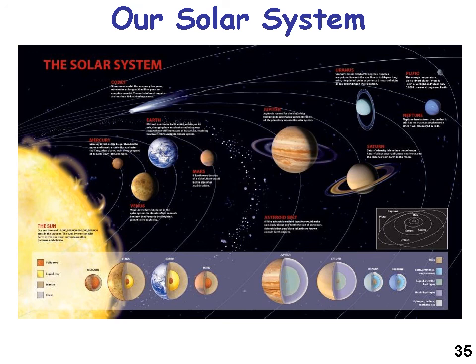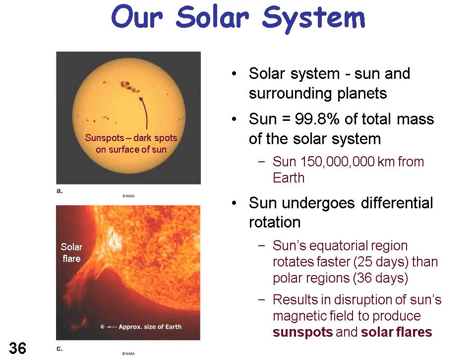The solar system includes the sun and surrounding planets. The sun is 99.8% of the total mass of the solar system, and the distance between the Earth and the sun is 150 million kilometers. The sun undergoes differential rotation — it has sunspots and solar flares. The sun's equatorial region rotates faster than the polar regions, so the whole sun doesn't rotate uniformly like the Earth does. This differential rotation results in disruption of the sun's magnetic field, which produces sunspots and solar flares.